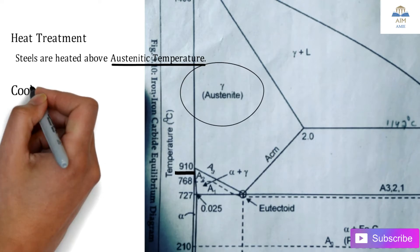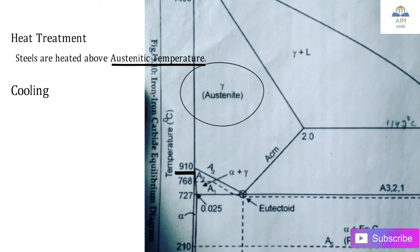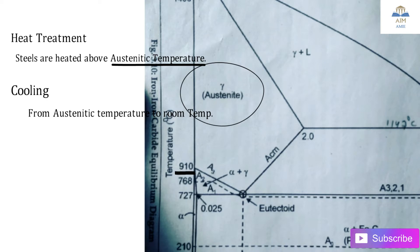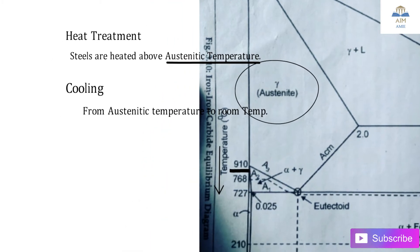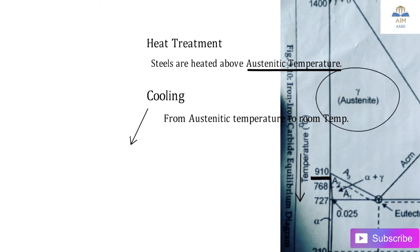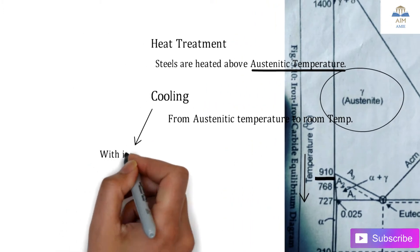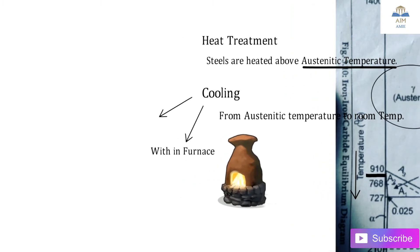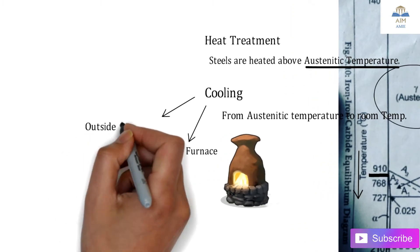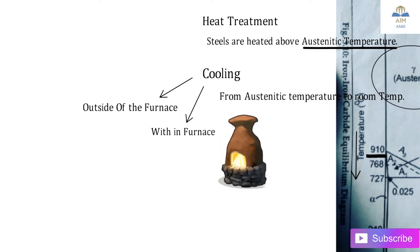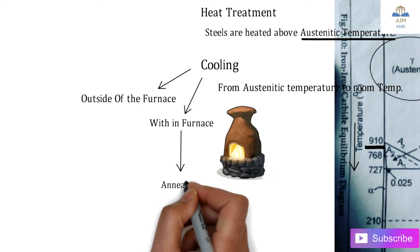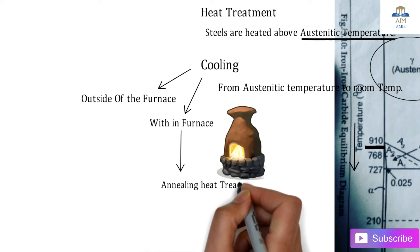The austenitic temperature is above 910 degrees Celsius. After heating, the next step is cooling — from the austenitic temperature down to room temperature. Cooling has two types: the first is cooling within the furnace by turning the furnace off, and the second is cooling outside the furnace at room temperature.